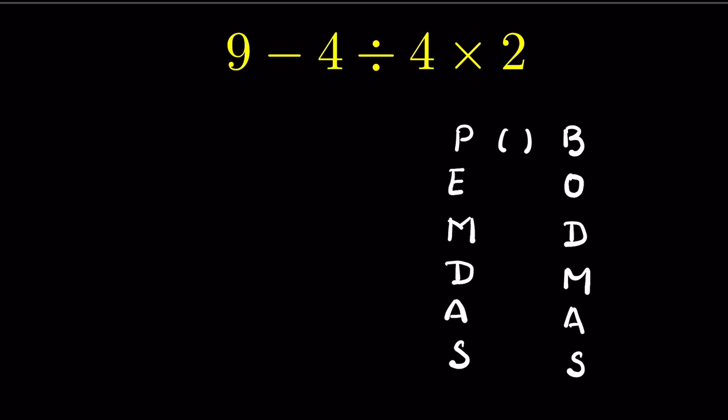If you follow the BODMAS rule, you will see that division comes first. So if you do division first, that means 9 minus 4 divided by 4 is 1 times 2, then 9 minus 2, giving you 7 as your answer. However,